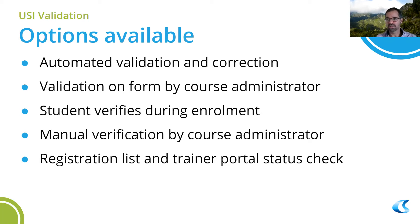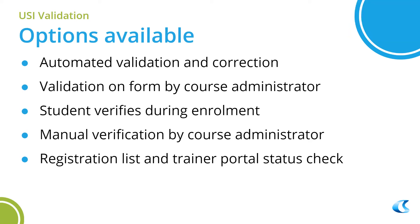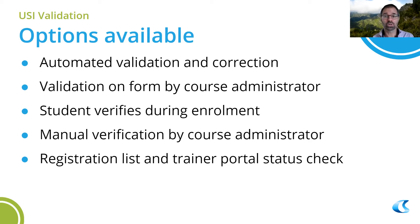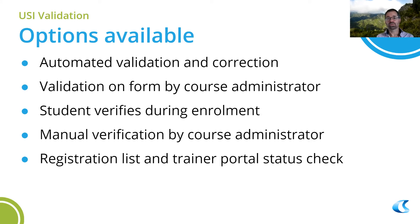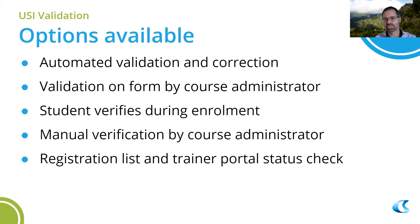Validation on the form by the course administrator involves clicking the validate USI button, which is a new feature. You click that on the right-hand side and it validates the USI against the birth date, first name, and last name. You don't actually have to save the form to do this. For example, you could change a name from 'Kev' to 'Kevin', push validate USI, confirm it works, then click save or apply for the enrolment document.